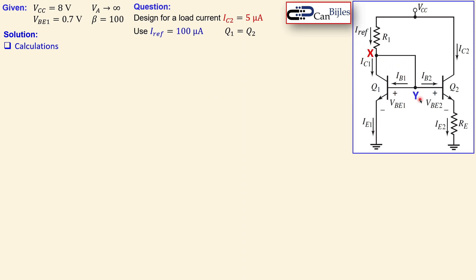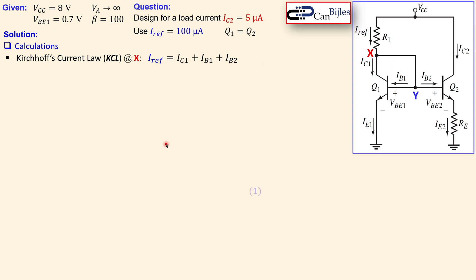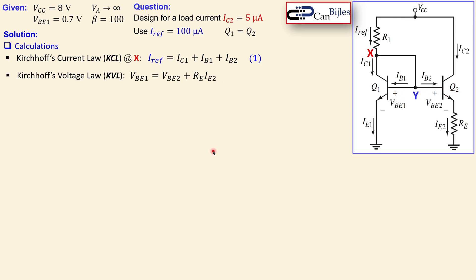For the first calculation, let's designate two nodes X and Y and apply Kirchhoff's current law (KCL) at node X. The reference current IRF splits into IC1 and another current, which further splits at node Y into IB1 and IB2. So we can write: IRF = IC1 + IB1 + IB2. Let's call this equation 1. Applying Kirchhoff's voltage law around the loop gives VBE1 = VBE2 + RE · IE2. This is equation 2.